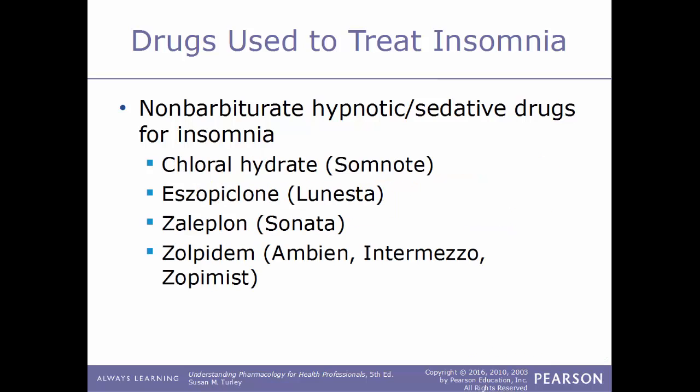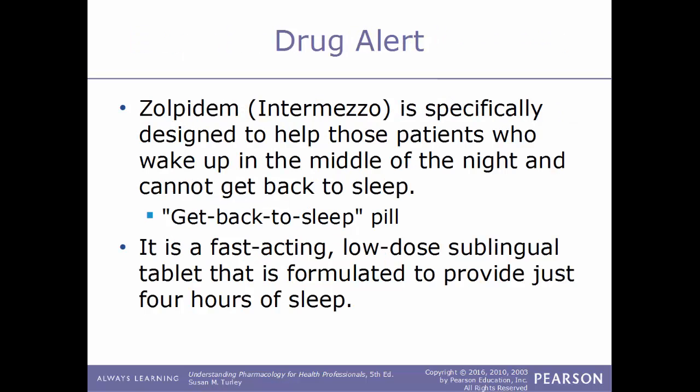Examples of non-barbiturate hypnotic and sedative drugs include chloral hydrate (Somnote), eszopiclone (Lunesta), zaleplon (Sonata), and zolpidem (Ambien/Intermezzo/Zolpimist). Intermezzo is specifically designed for patients who wake up in the middle of the night and can't get back to sleep — marketed as the 'get back to sleep pill.' It is a fast-acting, low-dose sublingual tablet formulated to provide only four hours of sleep.